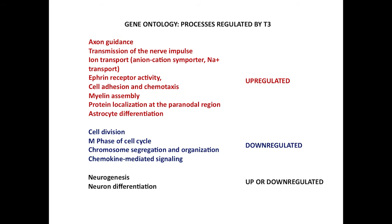These are the gene ontologies. What processes are regulated by T3? Up-regulated processes include axon guidance, transmission of nerve impulses, ion transport, and myelin assembly. Down-regulated processes include cell division and cell cycle. Both neurogenesis and neurodifferentiation are regulated, either up- or down-regulated.